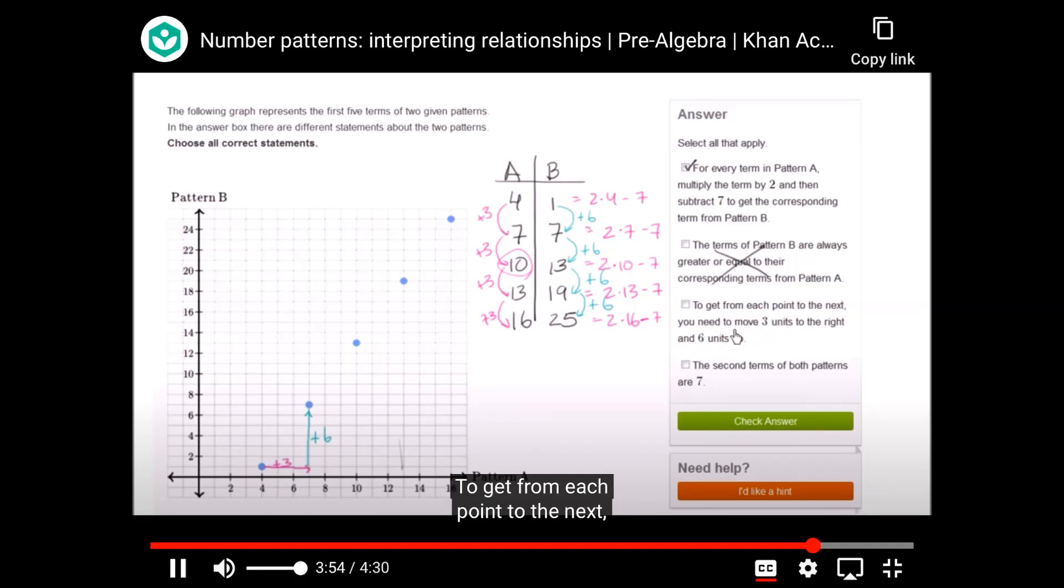To get from each point to the next, you need to move 3 units to the right and 6 units up. Well, that's exactly what we talked about. From one term to the next, pattern A along our horizontal axis, we increase by 3. While pattern B, which is plotted on our vertical axis, by 6. So you move 3 to the right and 6 up. So that is right.